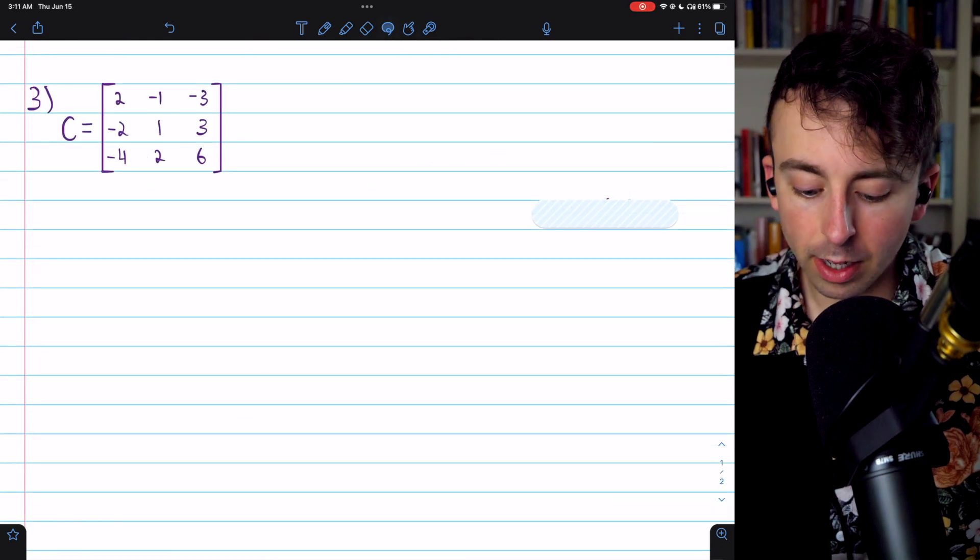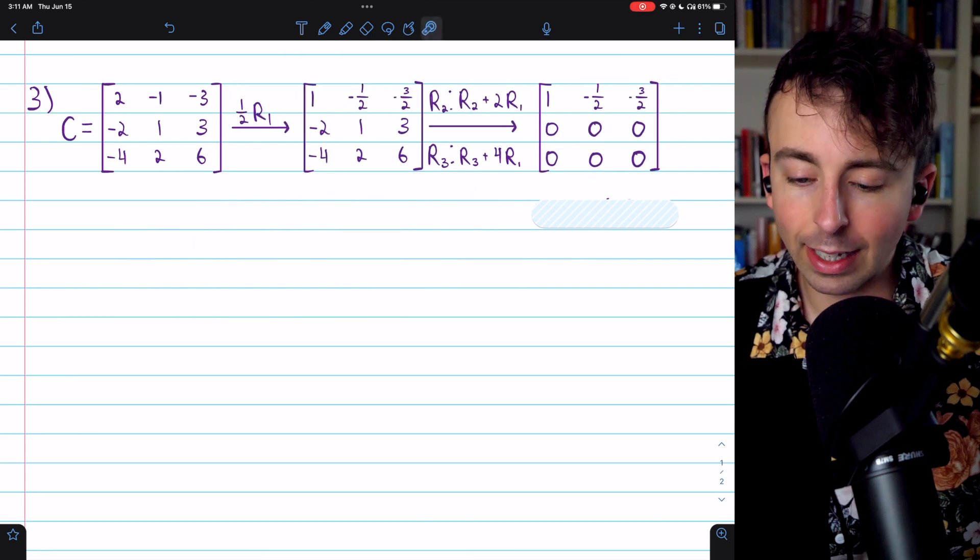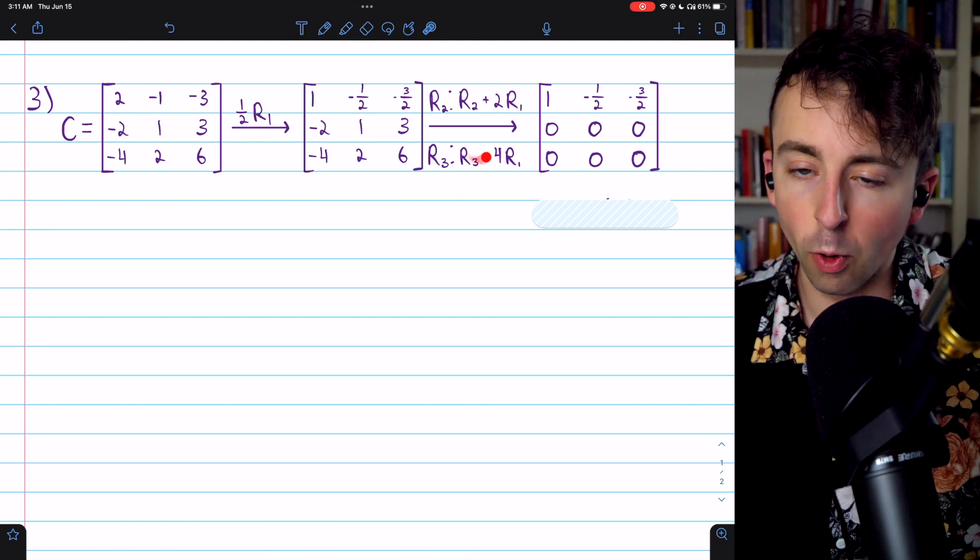Finally, our third example, matrix C. To find its rank, we're going to transform it into reduced row echelon form and count the number of non-zero rows. Here are the operations we need to perform to do this.